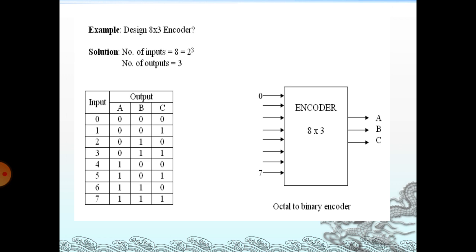This is an 8-to-3 encoder — specifically an octal-to-binary encoder. This truth table shows the octal-to-binary encoder. Here the input is 0 to 7. The base of octal is 8, giving 8 values from 0 to 7. The output will be 3 bits: A, B, C. Input 0 gives output 000; input 1 gives 001; input 7 gives 111. We are giving inputs 0 through 7 and it produces 3 outputs A, B, C.